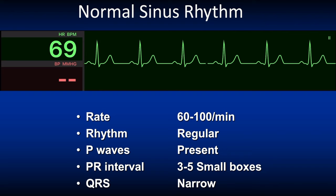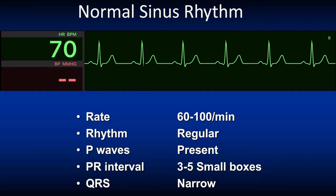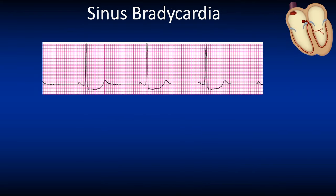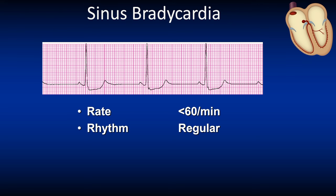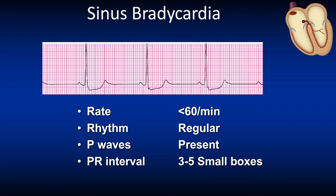Here we see a normal sinus rhythm at a rate of 69. Sinus bradycardia looks the same as a normal sinus rhythm but the rate is less than 60 beats per minute. The rhythm is regular, P waves are present, the PR interval is three to five small boxes, and the QRS complex is narrow.